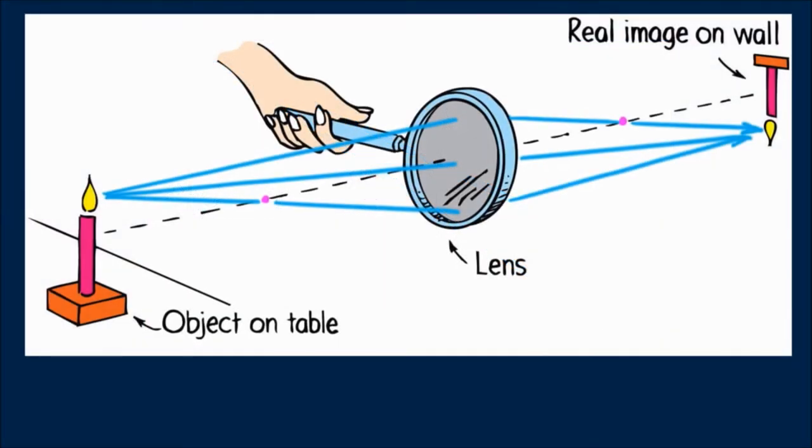And, as said before, when the object is beyond the focal point of a converging lens, a real image is formed instead of a virtual image. The real image of the candle is upside down. Real images with a single lens are always upside down.